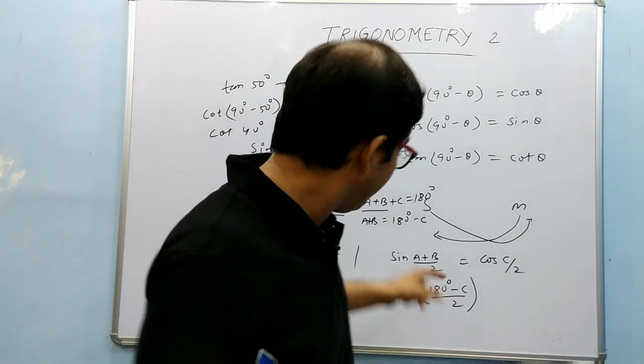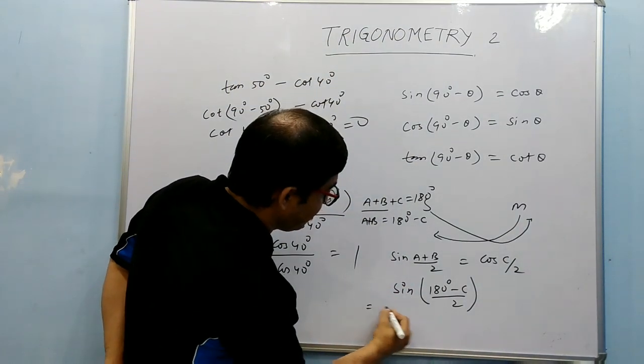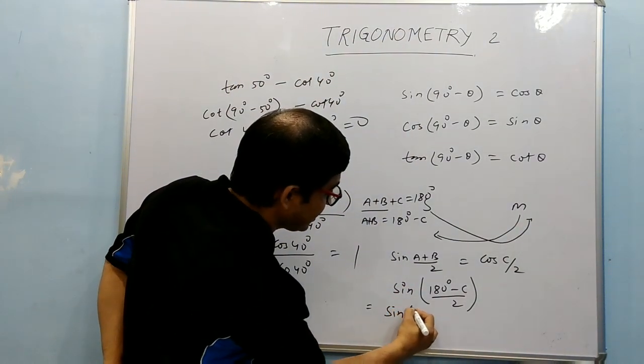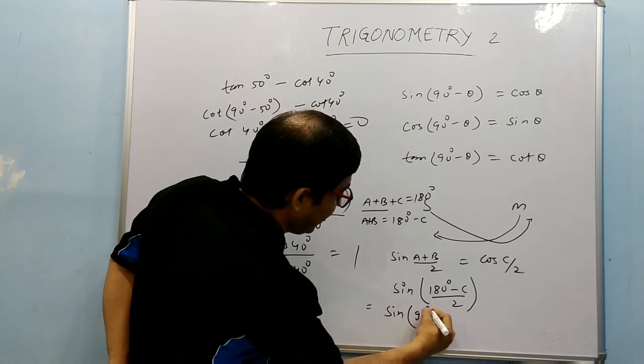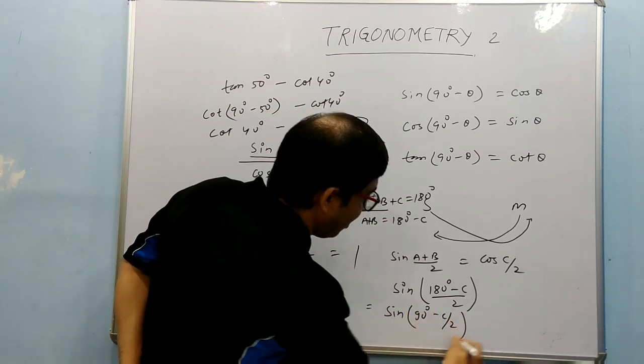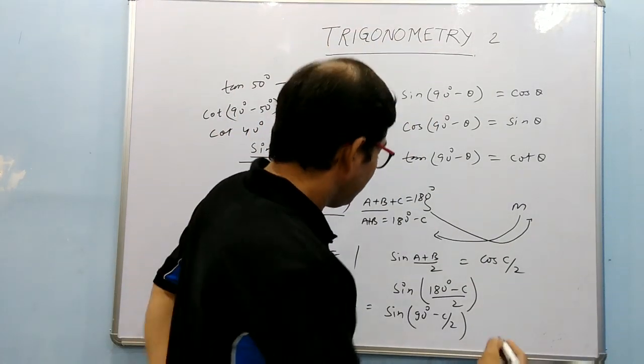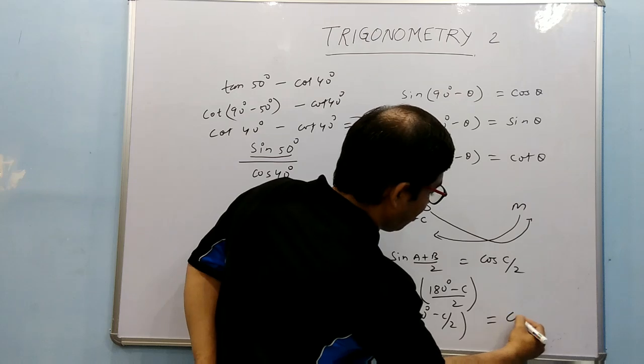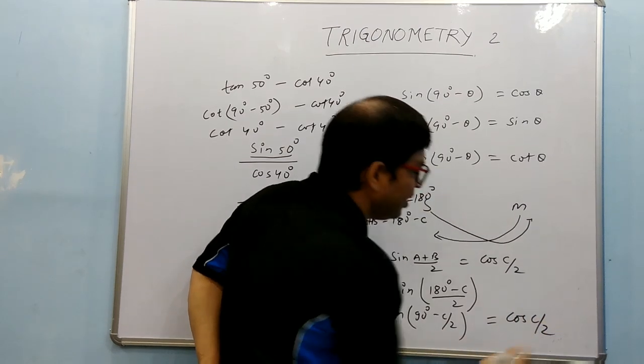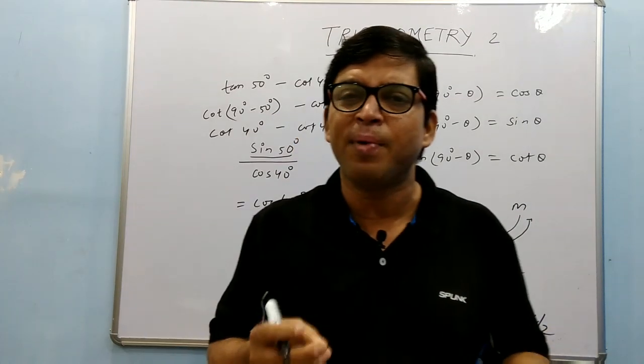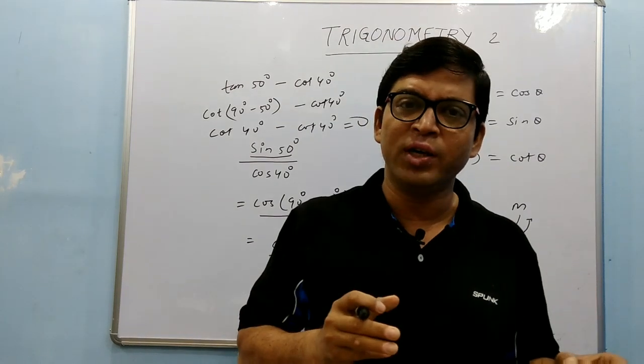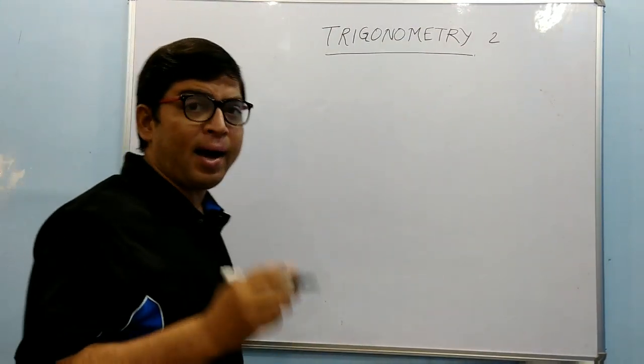On little bit of simplification, it is giving us sin(90° - C/2), and we know that sin(90° - θ) is cos θ. So this is coming out to be cos(C/2). This is very simple application. Just follow in this way.